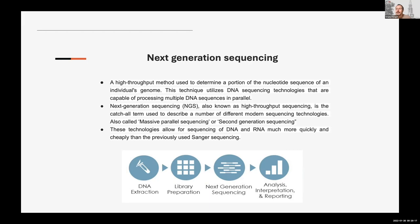23andMe costs about $100, gives you your ancestry, and tells you how mixed your background is. In Eastern Europe, it's a little less interesting, but in the US people are very interested in knowing if they have Swedish or German ancestry, for instance — 23andMe will really tell you that. Genotyping is not expensive compared to sequencing, but it's limited in terms of information.